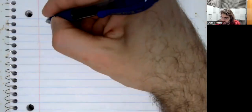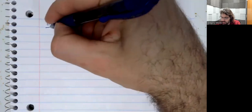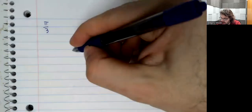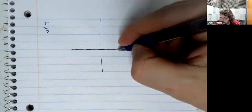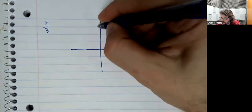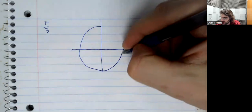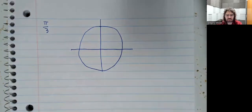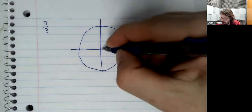But for now, suppose we have a number, say pi over 3, a number whose sine and cosine we can take. So here, making allowances for my not very great artistry, is the unit circle.